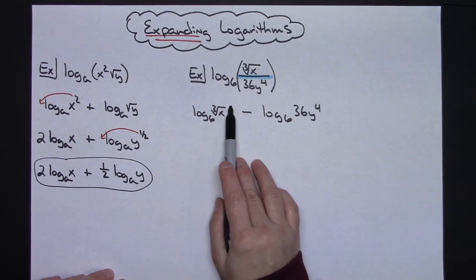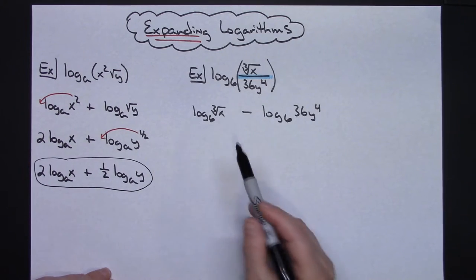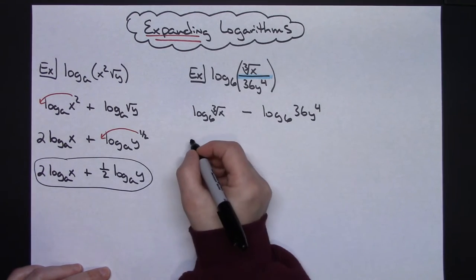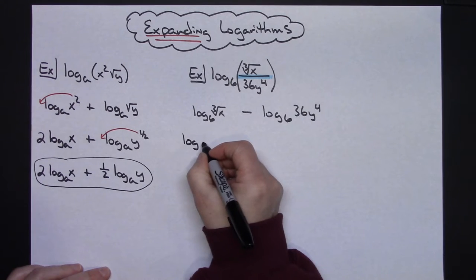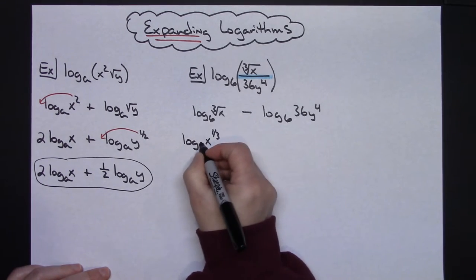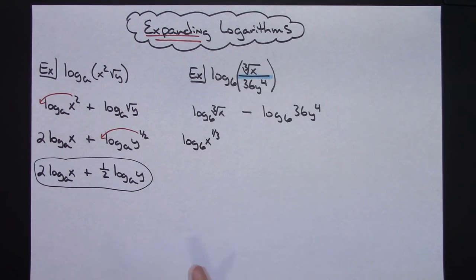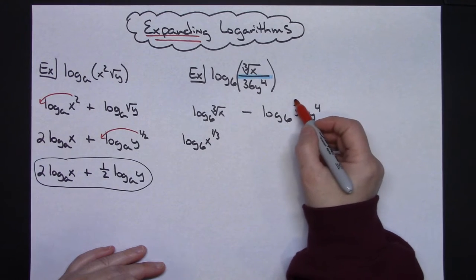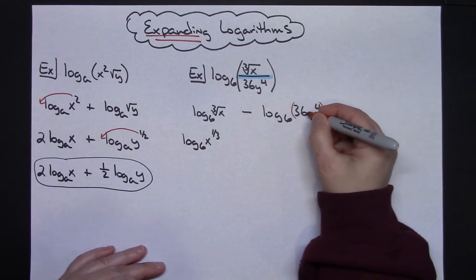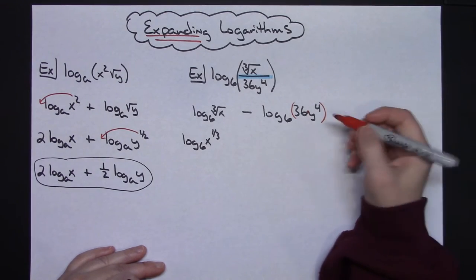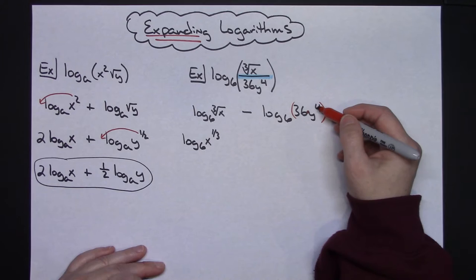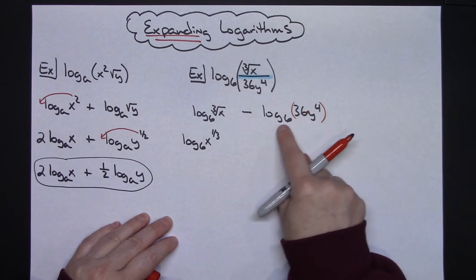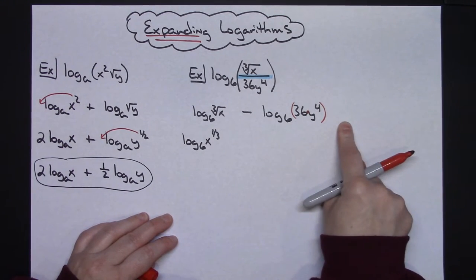Now I'm going to take this radical and rewrite it with an exponent. So I have the log base 6 of x raised to the 1/3. On the other side I have the log base 6 of 36y to the 4th. I see a multiplication happening there — 36 is being multiplied by y to the 4th. When I've got two things being multiplied I can break that up into addition, just like in the first example. So I'm going to break this up into an addition.